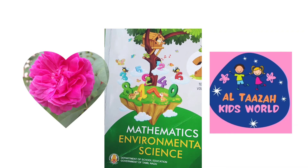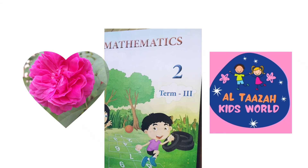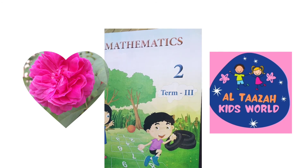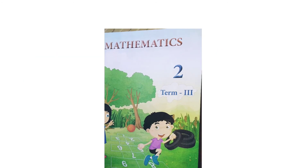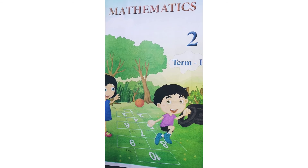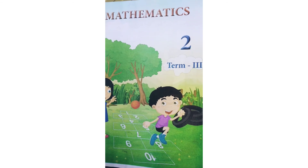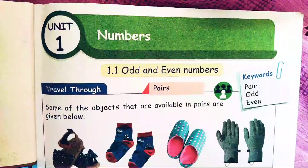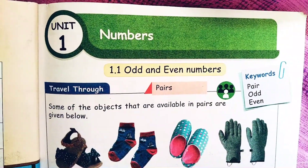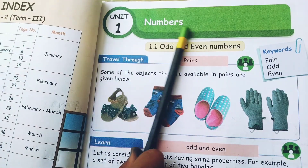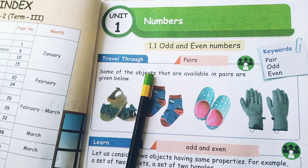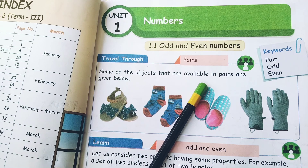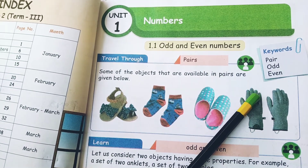Hi guys, welcome to Althaza Kidsville. Today we finished term 2 and we are starting mathematics second standard term 3. We are doing unit 1, numbers — odd and even numbers. Keywords: pair, odd, even.